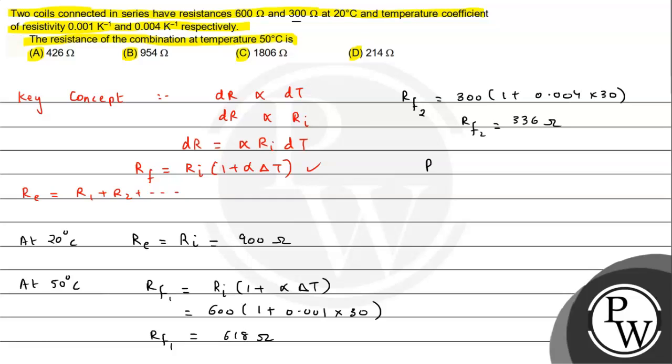We can say the equivalent resistance R_final in this case will be equal to R_f1 plus R_f2, which is 618 plus 336 in ohms. This result comes out to be 954 ohms.